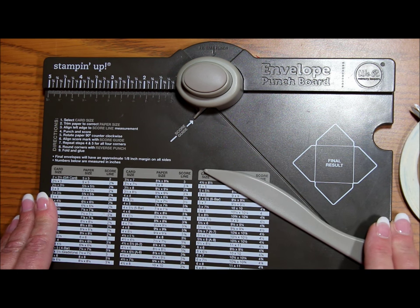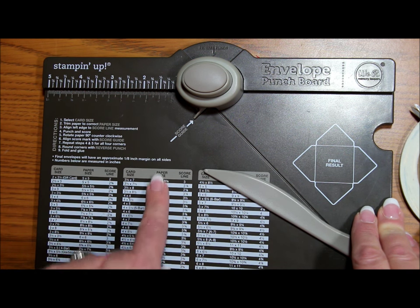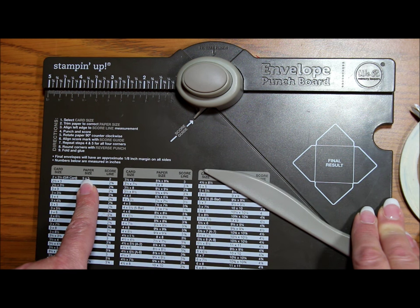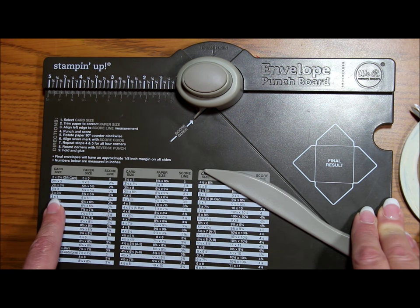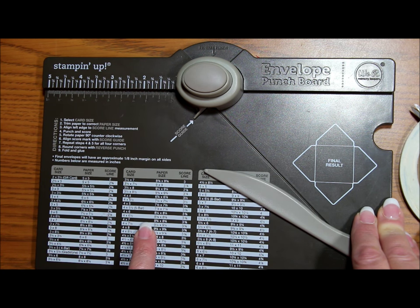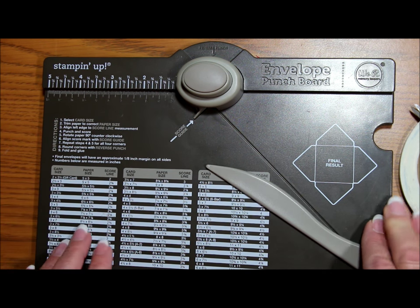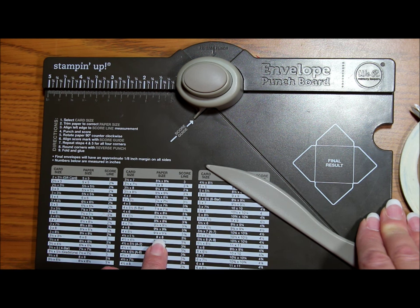Now, when you make a regular envelope using your envelope punch board, there's a guide here on the tool itself that shows you what size you need to cut your paper to and what score line to use for a given size of envelope. What we're going to be doing is we're going to be using those measurements that are provided and then we're going to be tweaking them a little bit. So, for example, for the four and a quarter by five and a half, it tells me that I need to cut my paper to eight by eight inches.